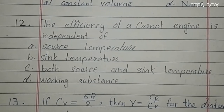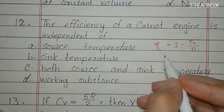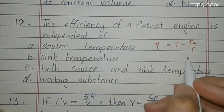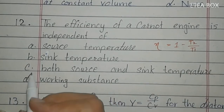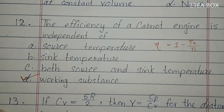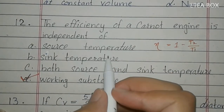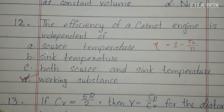Twelfth MCQ: the efficiency of a Carnot engine is independent of the working substance. The efficiency equals 1 minus T₂ divided by T₁, so it depends on source temperature T₁ and sink temperature T₂, but is independent of the working substance. So option D is correct.